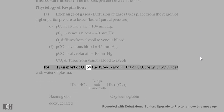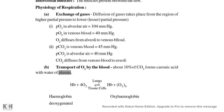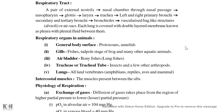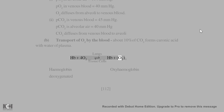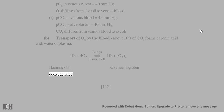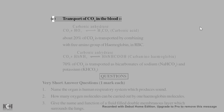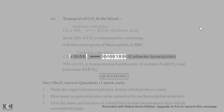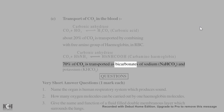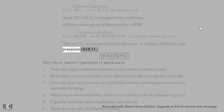Transport of O2 by the blood: Hemoglobin (Hb) combines with O2 to form oxyhemoglobin — Hb + 4O2 → HbO8 (oxyhemoglobin). Transport of CO2 in the blood: CO2 + H2O → H2CO3 (carbonic acid), catalyzed by carbonic anhydrase. About 20% of CO2 is transported by combining with the free amino group of hemoglobin in RBCs, forming carbaminohemoglobin. About 70% of CO2 is transported as bicarbonates of sodium (NaHCO3) and potassium (KHCO3).